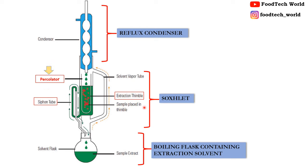A very small amount of dry sample is added in the thimble, and when heat is applied to the round bottom flask, the extraction solvent starts evaporating and percolates over the sample. The evaporating solvent reaches the reflux condenser where it cools down and refluxes into the percolator, and when the percolator fills up with condensed solvent above the siphon, it returns to the round bottom flask by siphon. The extracted solutes remain in the flask, and fresh solvent is evaporated again. This process continues until the extraction is completed.